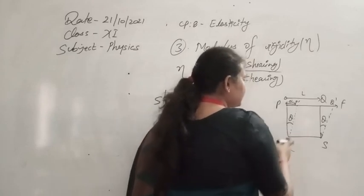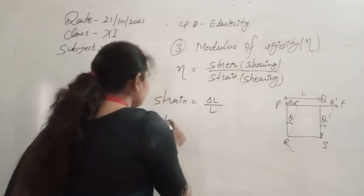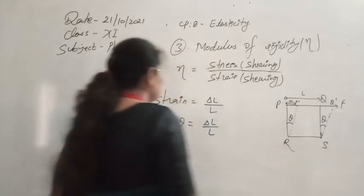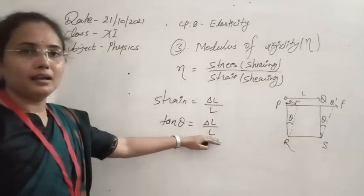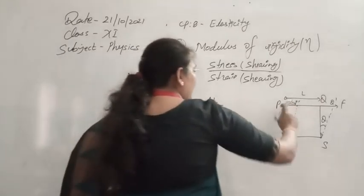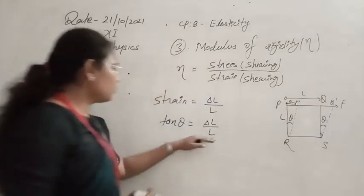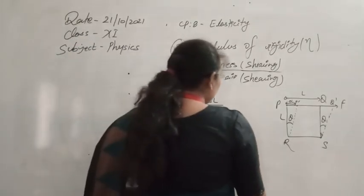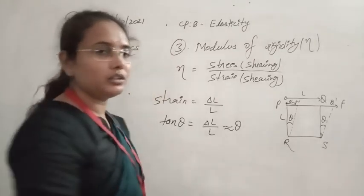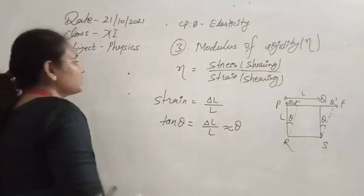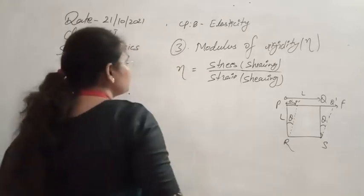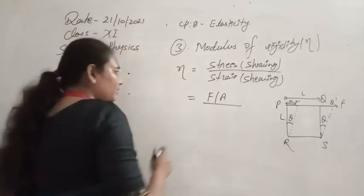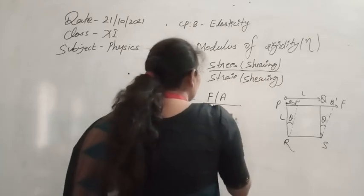Now if we calculate tan θ in this equation, consider the triangle Q Q' R. In that triangle, tan θ equals perpendicular over base, which is delta L over L. Here the perpendicular is delta L and the side is L, and this is our strain. If this angle θ is very small, we can write tan θ directly equal to θ. So the shearing stress is F/A and the shearing strain can be written as tan θ, or delta L by L, or directly as θ.